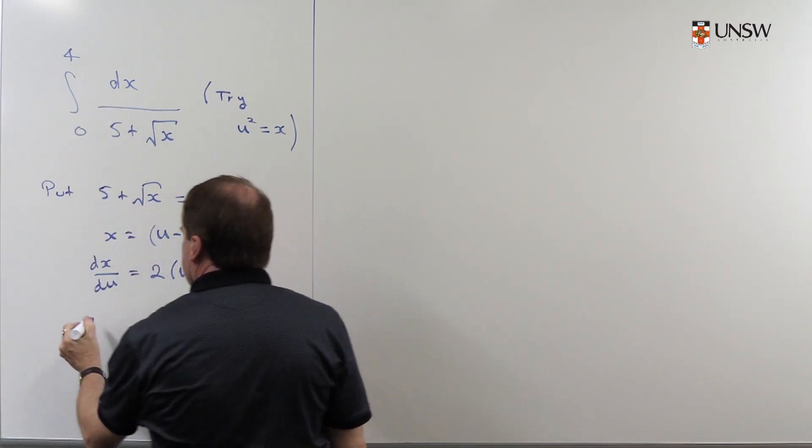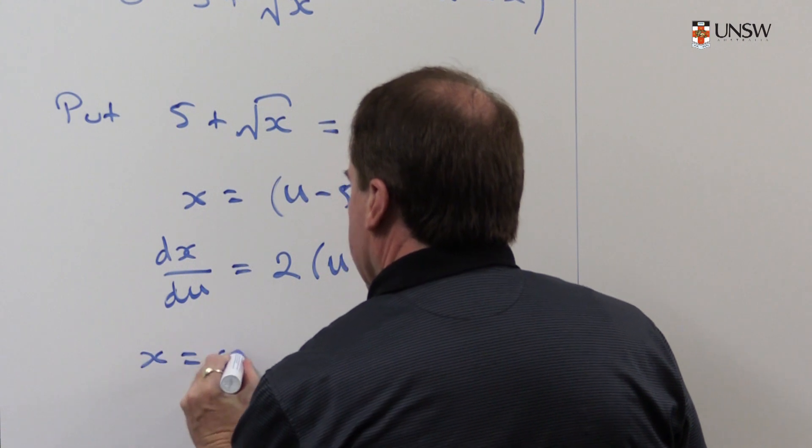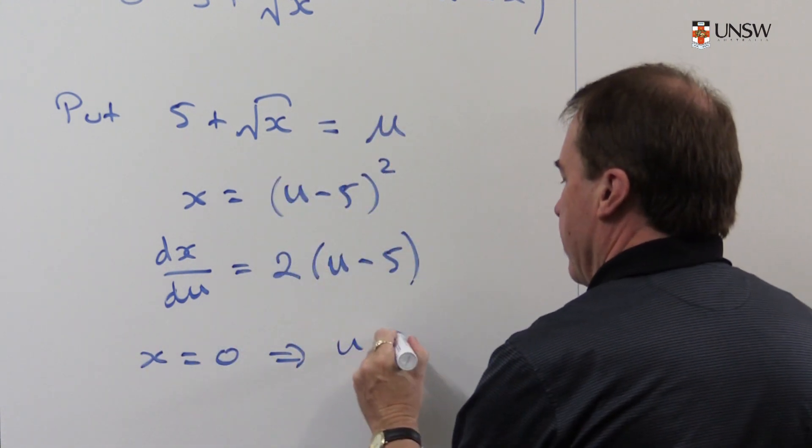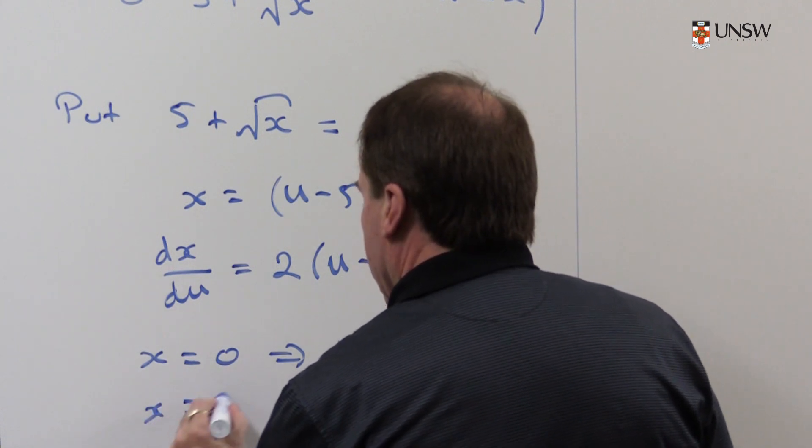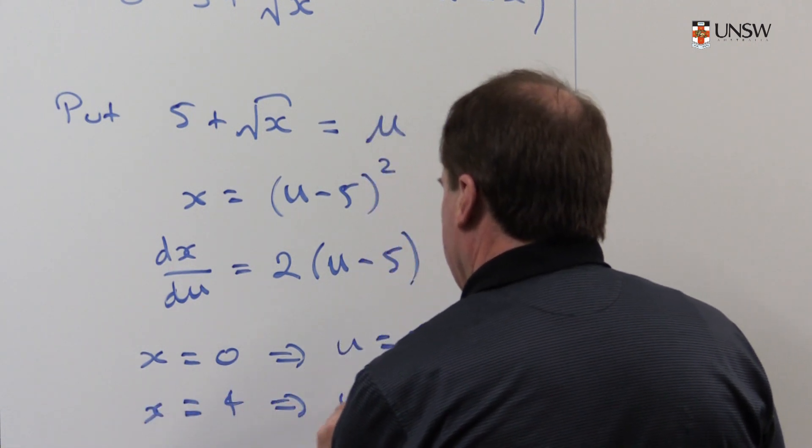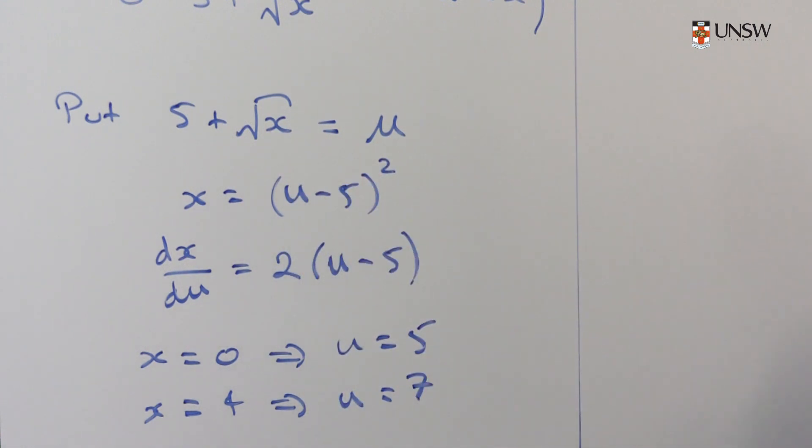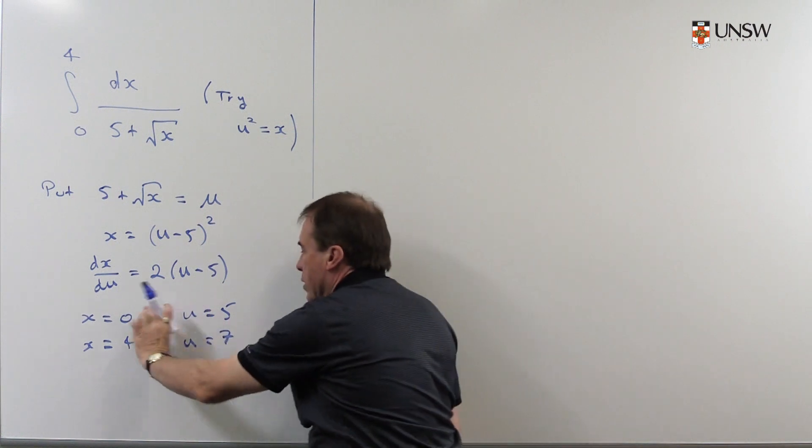I better check the two endpoints. So when x is 0 then I can plug that in I get u is 5 and when x is equal to 4 I plug that in back up into here and I get 7. So change the endpoints as you go.